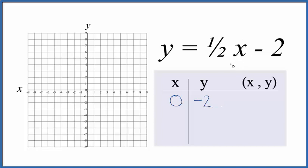Then I want to choose something that's going to give me an even number here, just be easier to graph. How about two? Because if we put two, one half times two, that's one, and then one minus two, that gives us a negative one.